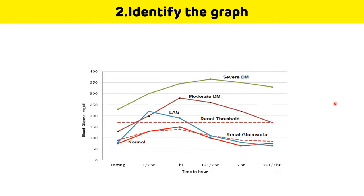Second question: identify the graph. This graph is of the oral glucose tolerance test (OGTT), which is done for the diagnosis of diabetes mellitus. In OGTT, three samples are collected: the fasting or zero-hour sample, and after collection, 75 grams of anhydrous glucose is given to the patient. Then two samples are collected — first at one hour and second at two hours — and all values are plotted on the graph.